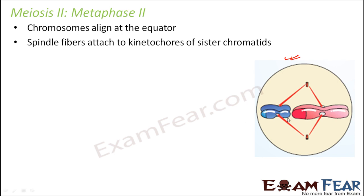The spindle fibers attach to the kinetochores of sister chromatids. So now they are connected to sister chromatids — you can guess what is going to happen in the next step: they are going to get separated. In the next step, the sister chromatids are going to get separated, just like in mitosis.